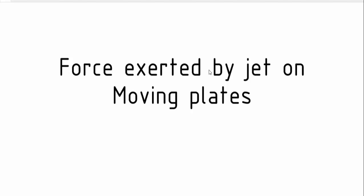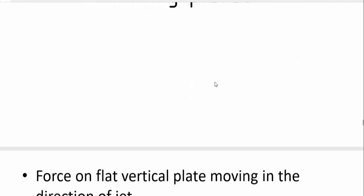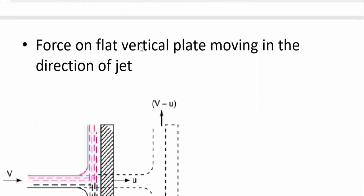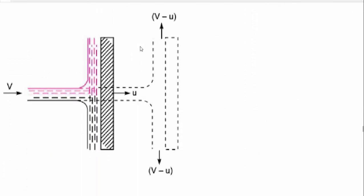We will use the relative velocity. First, force on a flat vertical plate moving in the direction of the jet. In the previous case, the plate was fixed, but in this case the plate will move. A jet of water moves in the direction of the plate with velocity u, whereas the jet velocity is v. The relative velocity is v minus u, where v is the velocity of the jet and u is the velocity of the plate.